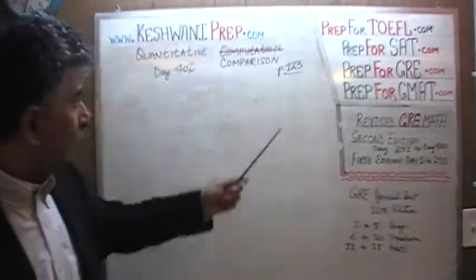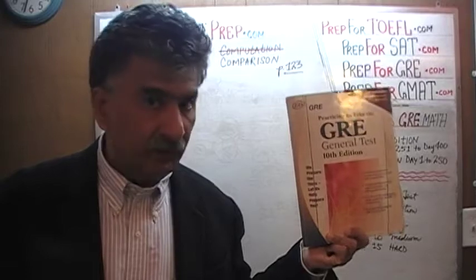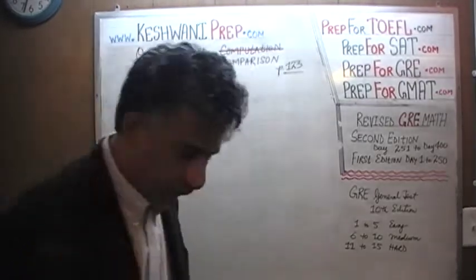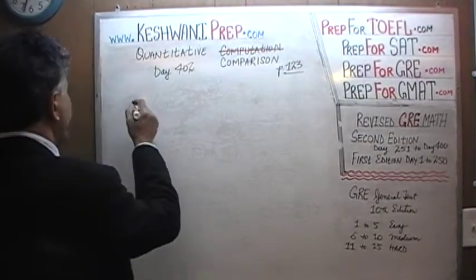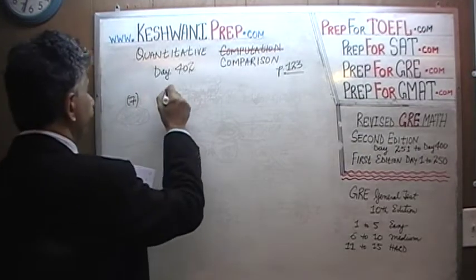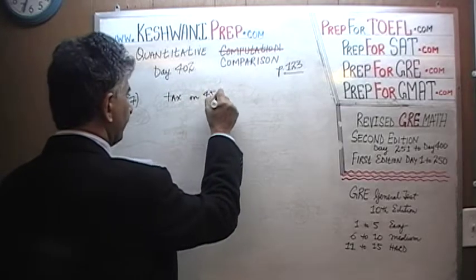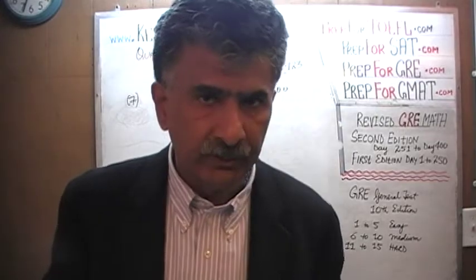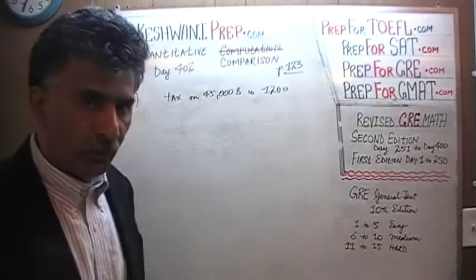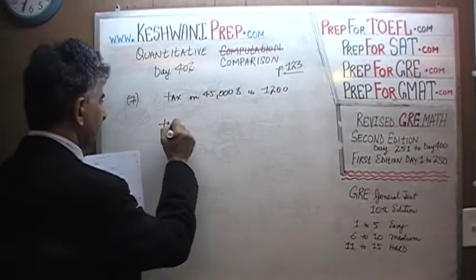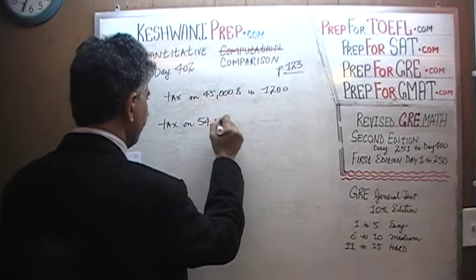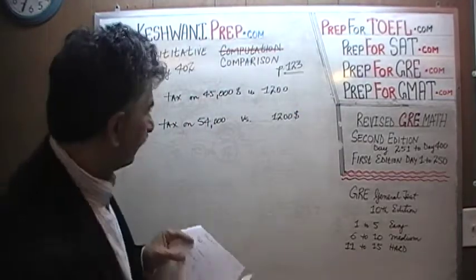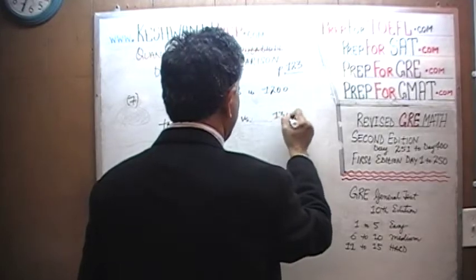Let's turn to page number 123. If you happen to own this book, great; if not, try to get hold of one. Day 402 — we are on problem number 7. Problem number 7 says: the tax on $45,000 is $1,200. We are being asked to compare the tax on $54,000 versus $1,300.